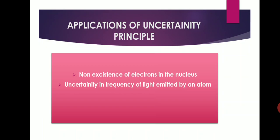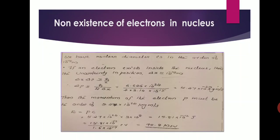There are two applications of the uncertainty principle: first, the non-existence of electrons in the nucleus, or absence of electrons in the nucleus; and second, uncertainty in the frequency of light emitted by an atom, or that spectral lines have a finite width.